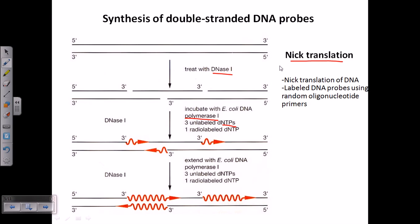We need to not only produce these probes but also ensure that the probes are attached to some kind of label — either a radioactive isotope or a chemiluminescent molecule. In this procedure, as we are extending these gaps with DNA polymerase I, we provide some labeled dNTPs. One type of dNTP is radio-labeled — for example, the adenosines are all radio-labeled — and the remaining three types of dNTPs are unlabeled. When extension begins, the radio-labeled isotope gets incorporated into the newly synthesized regions.